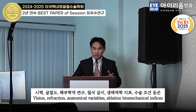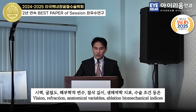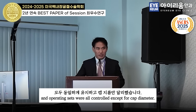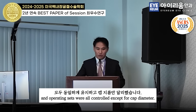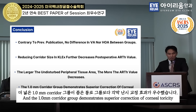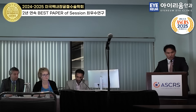Vision, refraction, anatomical variables, aberrometry, biomechanical indices, and operating parameters will all be controlled except for cap diameter. The one millimeter corridor group demonstrates superior correction of corneal irregularity compared to the smaller corridor group. Thank you very much.